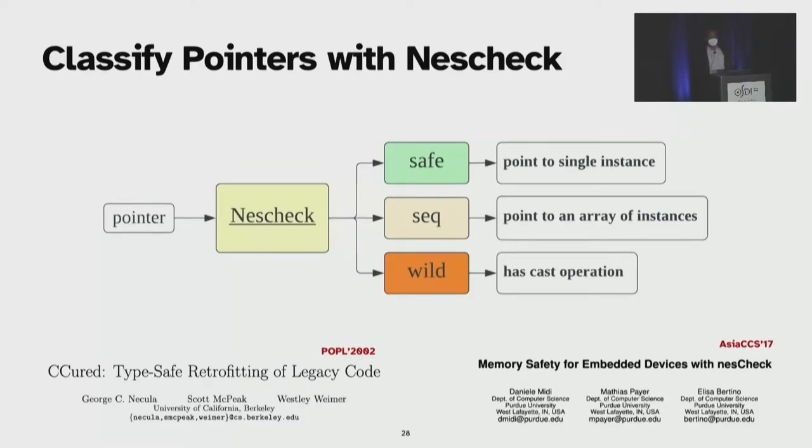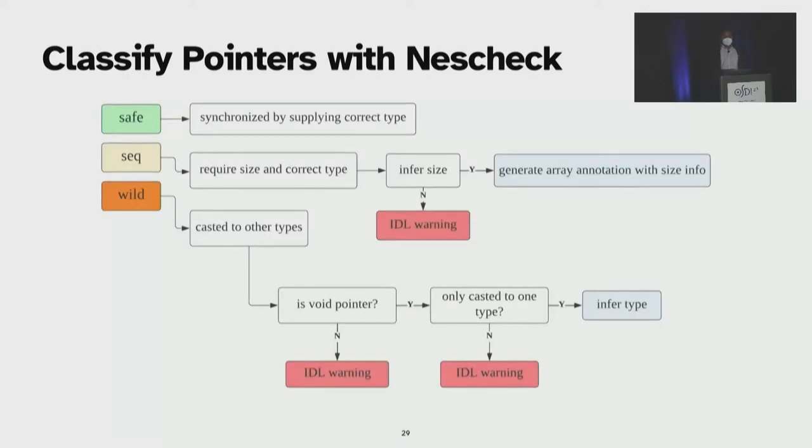For example, if a pointer has pointer arithmetic instructions applied to it, it will be considered as a sequential pointer, which may point to an array. Pointers with a cast operation are wild pointers. First, it's easy to classify safe pointers because it is just pointing to a singleton. You can get the type information and marshal it correctly. For sequential pointers, we try to infer the size of the array based on the PDG. If the array size cannot be inferred statically, we generate warnings. And for wild pointers, if the casted pointer is pointed from a void pointer, then we check if it is typecasted only to one struct type other than the void pointer. If so, we can generate marshaling information from the typecasted data structure. Otherwise, the void pointer can be casted to multiple different data types. In such cases, we will issue a warning.